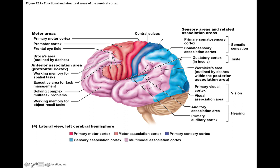Looking at the cerebral cortex, we can divide it not just by lobes but also by functional areas. The frontal lobe contains the premotor cortex, Broca's area, the primary motor cortex, and the frontal eye field. The parietal lobe contains the primary somatosensory cortex, association cortex, portions of the gustatory cortex, and Wernicke's area. The temporal lobe contains the primary auditory cortex, portions of Wernicke's area, and deeper structures like the hippocampus involved with learning and memory. The occipital lobe contains the primary visual cortex and association areas.